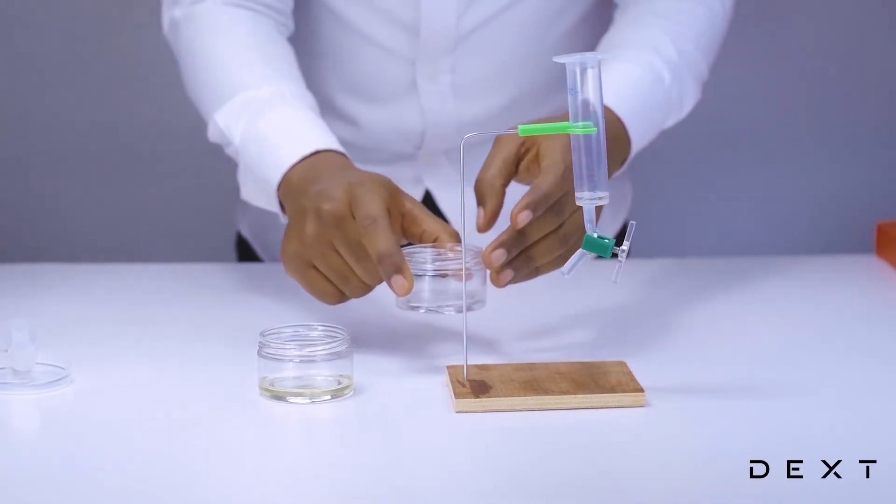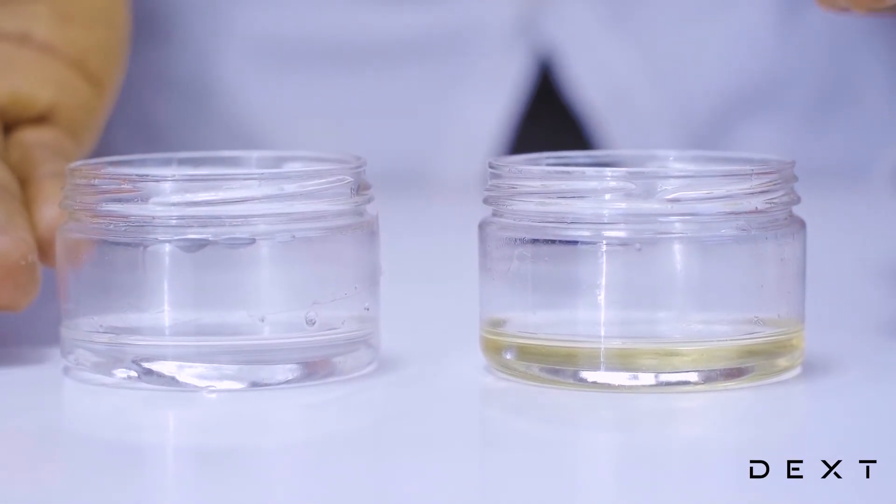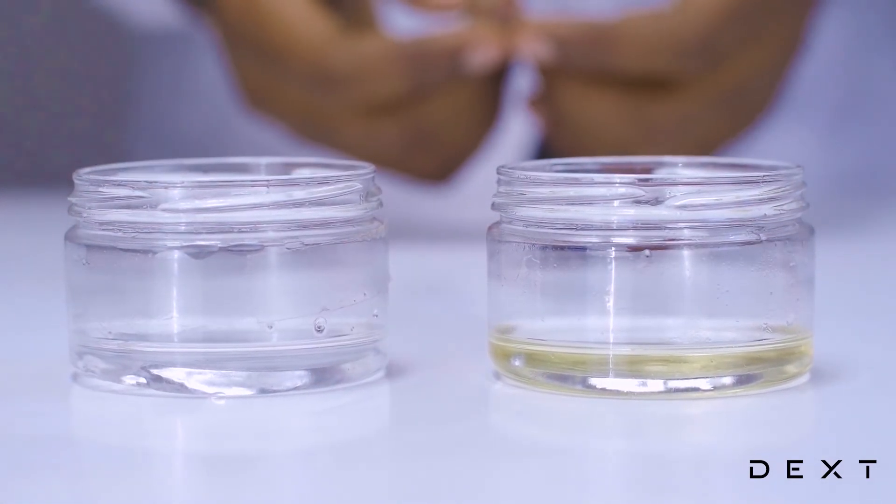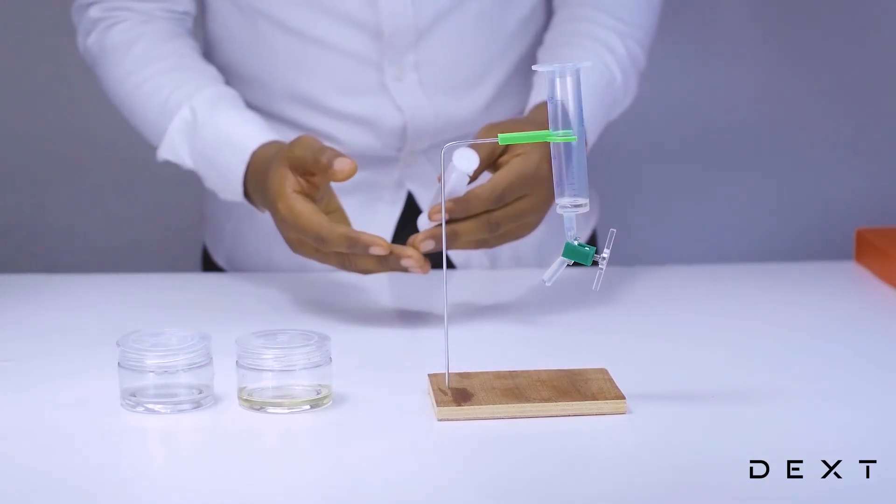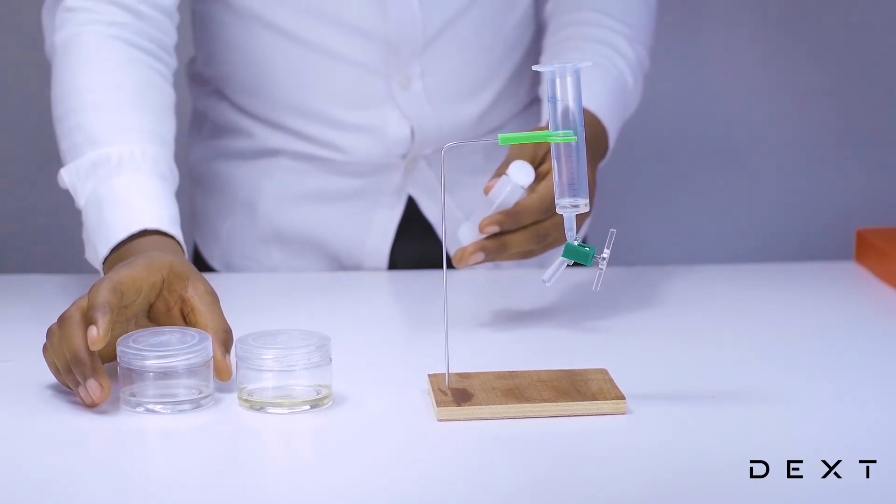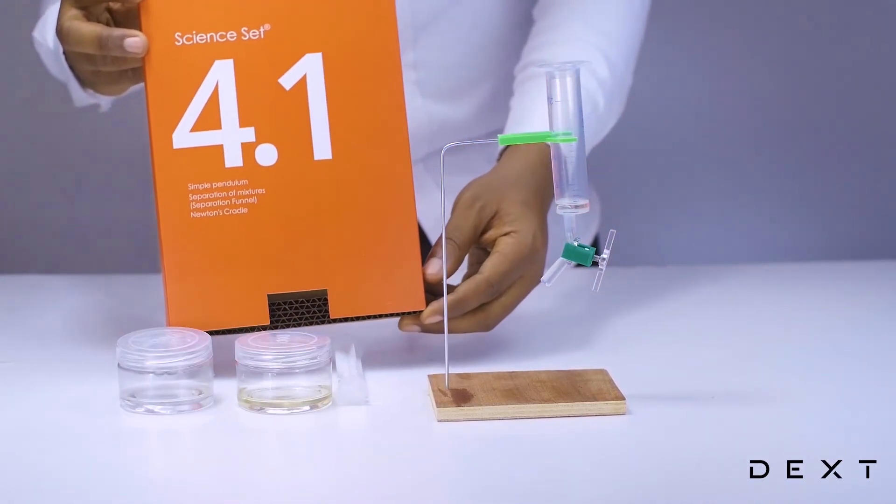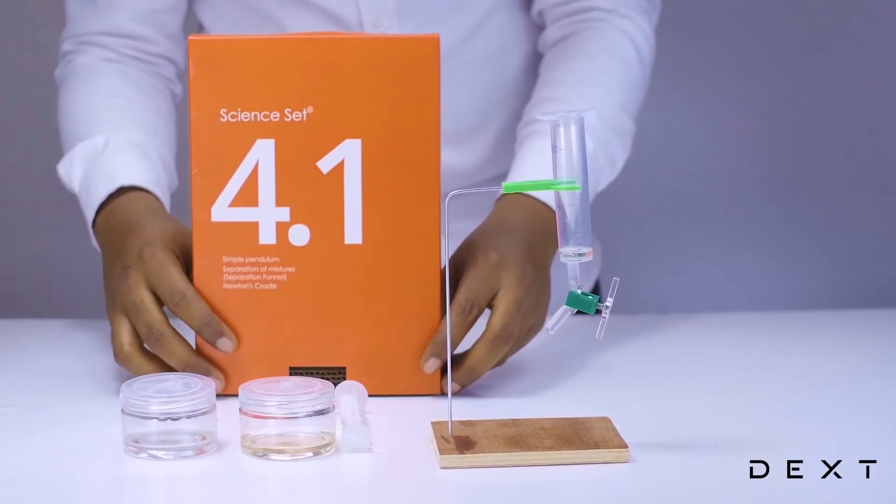Nice. Now, we have separated the two immiscible liquids, our water and our oil. They were first mixed together, but using our separating funnel, we have been able to nicely separate them back into the components. As always, this has been the tutorial using the Dext Science Set 4.1.